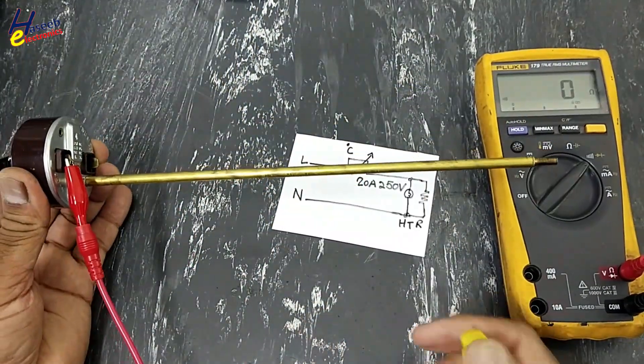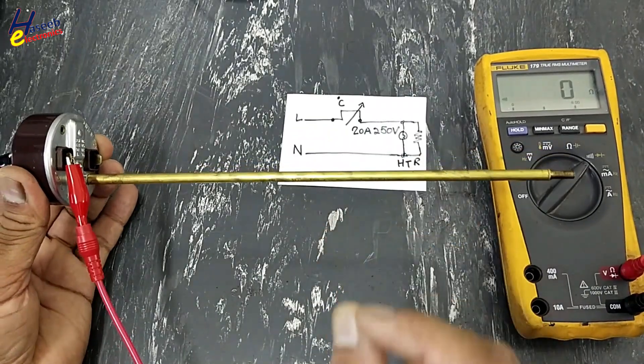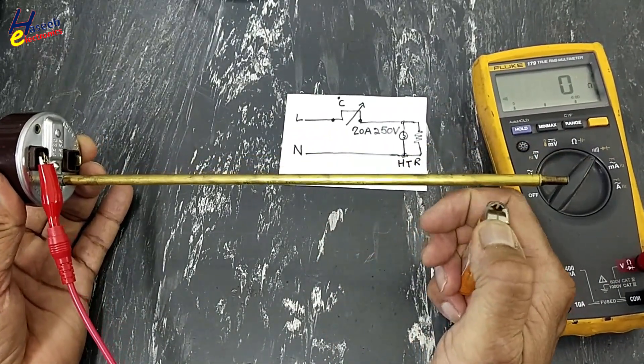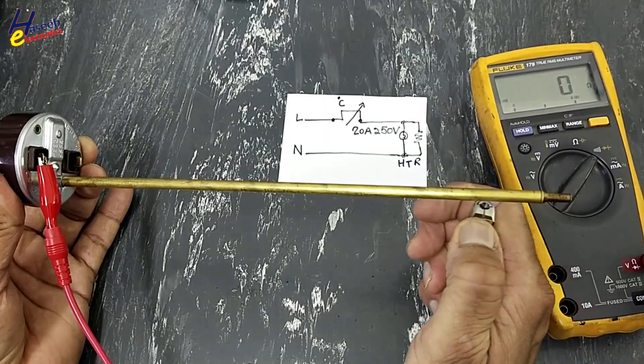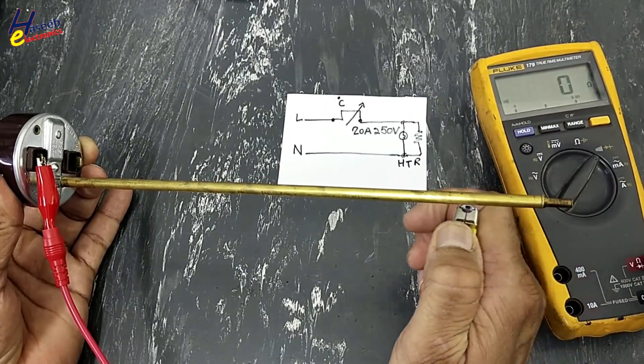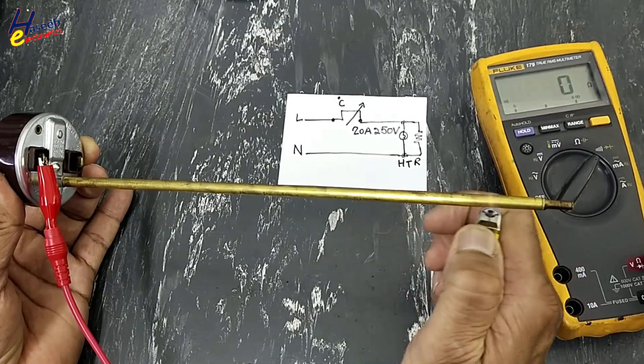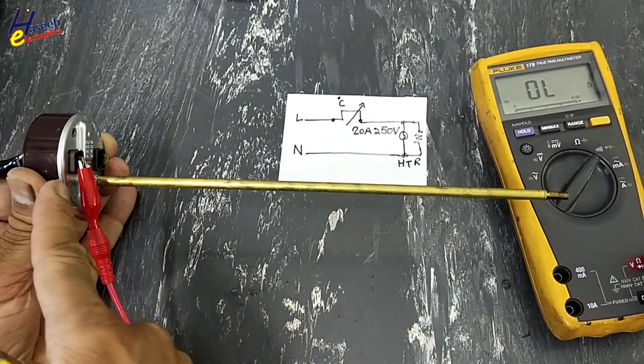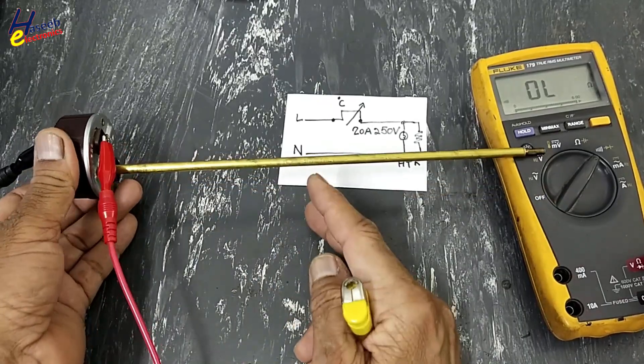Now we will verify that it will trip at specific temperature or not. We will heat this body. If it is good it will trip off. Click sound - the switch is tripped off. Now we will leave it here.